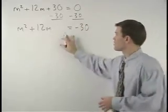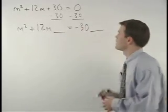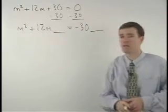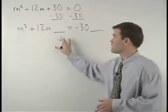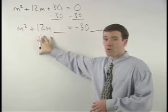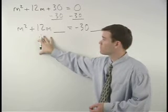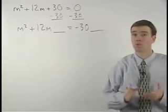Notice that I've left room for a space on each side of the equation. The number that goes in each space is the number that we need to create a perfect square trinomial on the left side of the equation. The question is, what is that number?